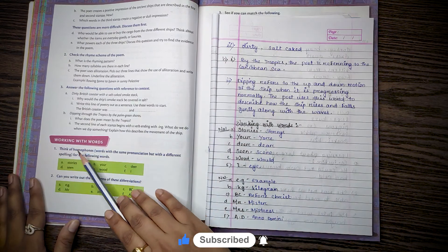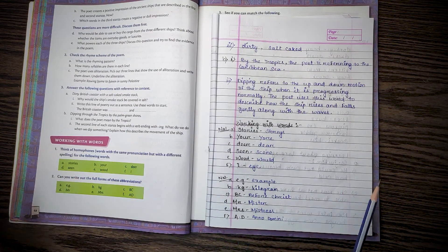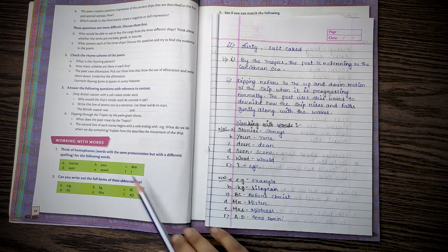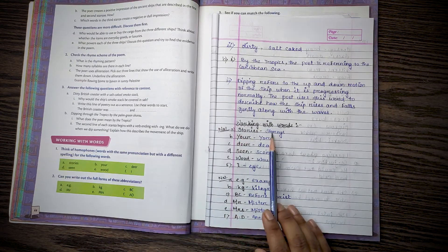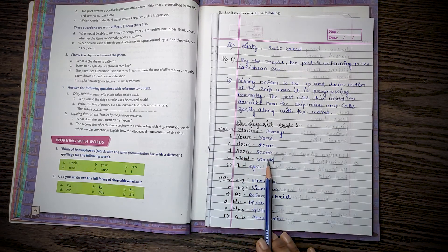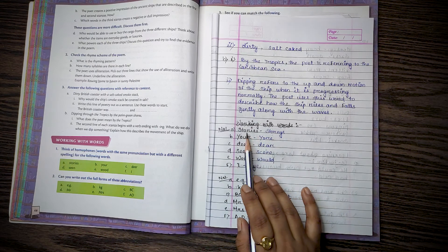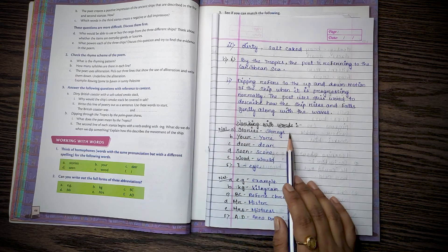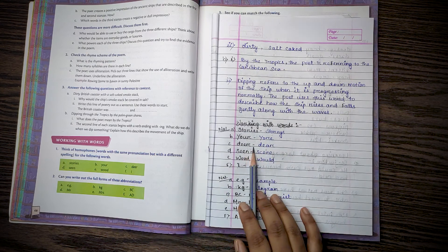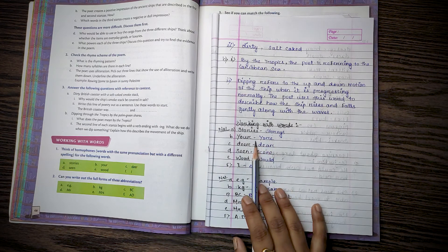Then working with words. Think of homophones. Homophones means what? The words sound the same but the spellings are different. Like stories, stores. Your, you're. Dear, deer. Sane, sain. Would, wood. Eye, I. The meaning is different and the spelling is different.